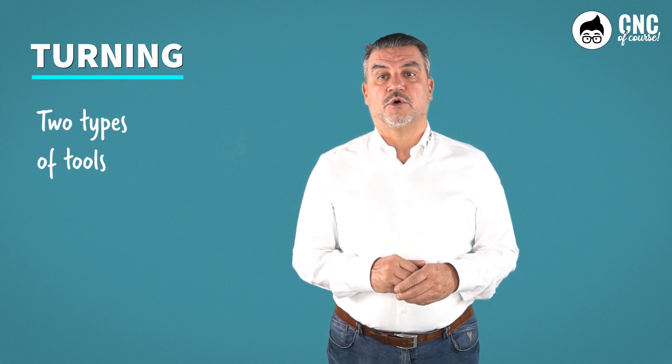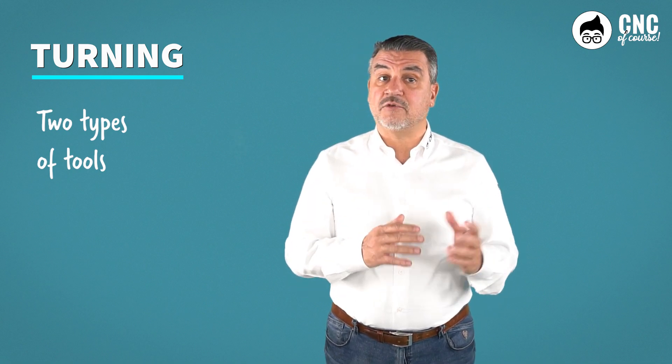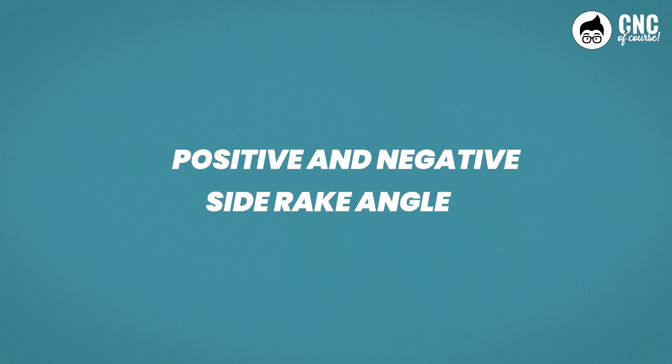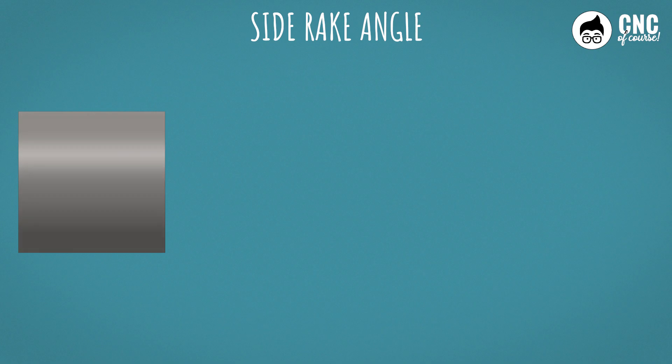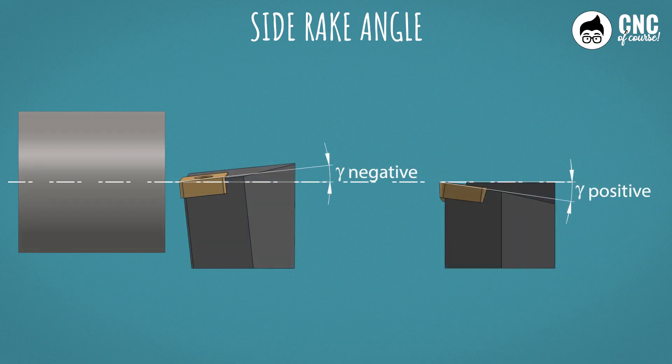Tools with a negative rake angle, and tools with a positive rake angle. If we look at our turning workpiece from the side, keeping in mind that the tip of the insert must be on the centerline of the workpiece, we can say that the gamma rake angle is the angle formed between the face of the tool and the